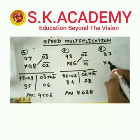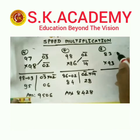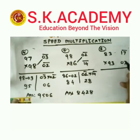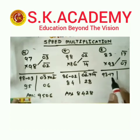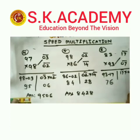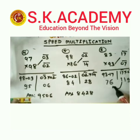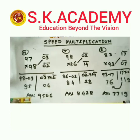One more example: 83 multiplied by 93. Subtract base 100: 83 minus 100 is bar 17, and 93 minus 100 is bar 07. Take the diagonal: 93 minus 17 equals 76. Then minus 17 multiplied by minus 7 is 119 — that is 3 digits, so transfer the 1 and add it to 76. We get the answer 7719. In this way we can find any multiplication easily. Thank you.